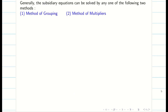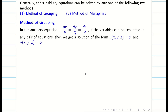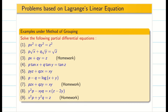To solve the subsidiary equation we have two different methods: method of grouping and method of multipliers. In method of grouping, we group the variables — if it has x and y, group x to one side and y to the other and integrate. Similarly, if it has y and z, group y to one side and z to the other and integrate to get u and v, then write the general solution f(u, v) = 0. In this session we are going to see problems on grouping. In the next video part 2 we will see problems on multipliers.